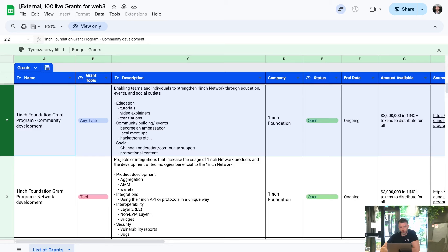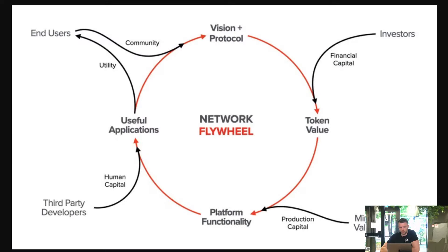We also have projects related to layer two, layer one, and layer zero — which is pretty much what the network flywheel effect is about: how to make sure we spin up our network flywheel.